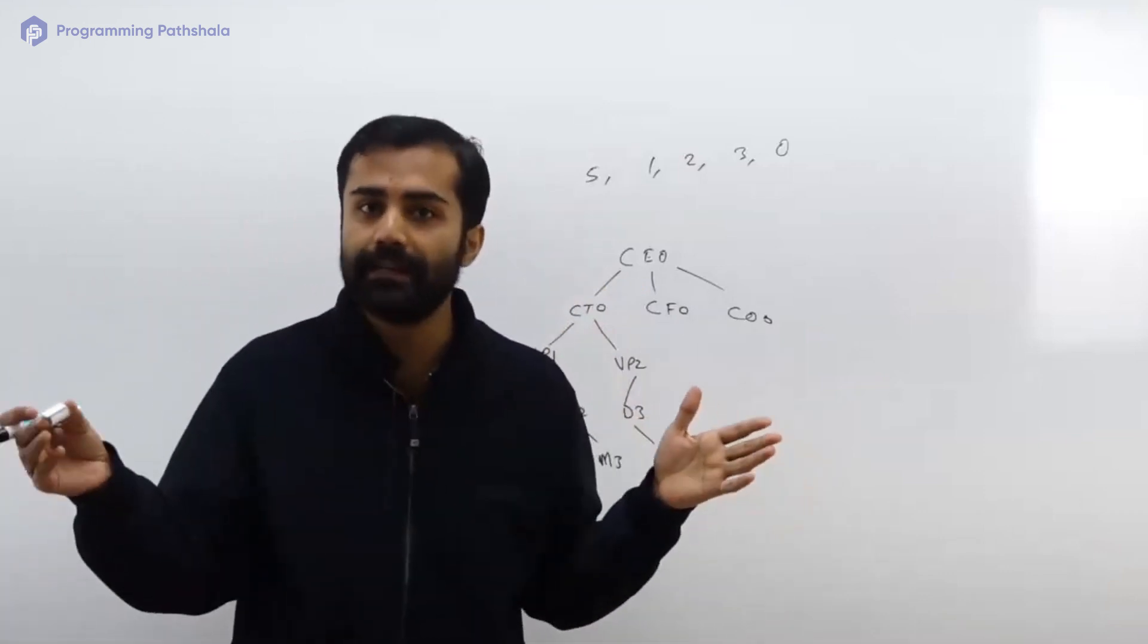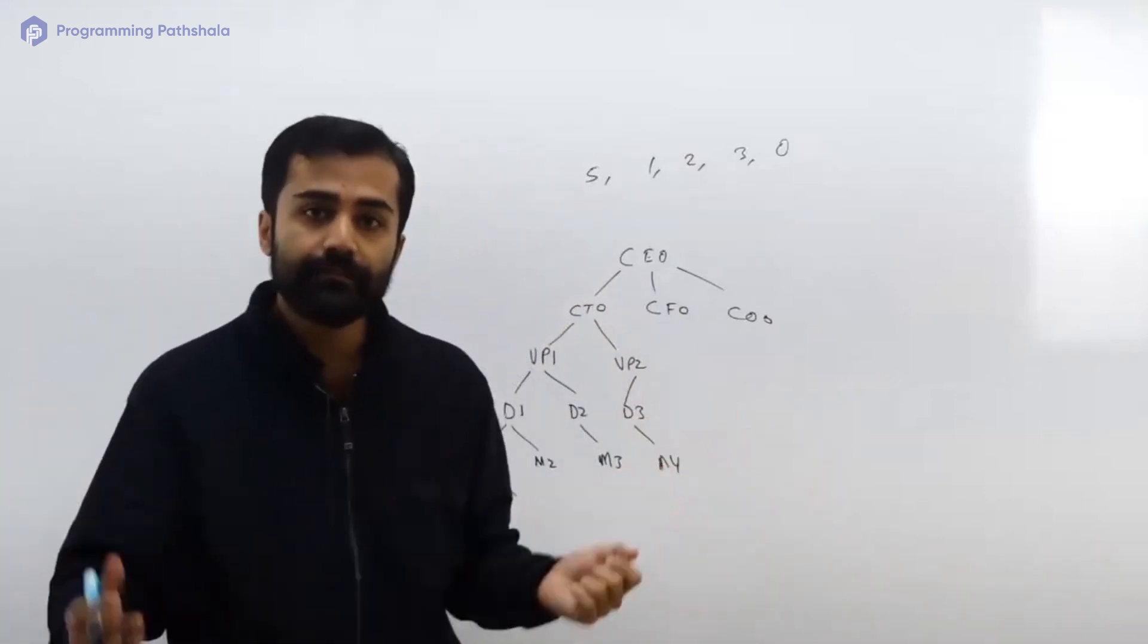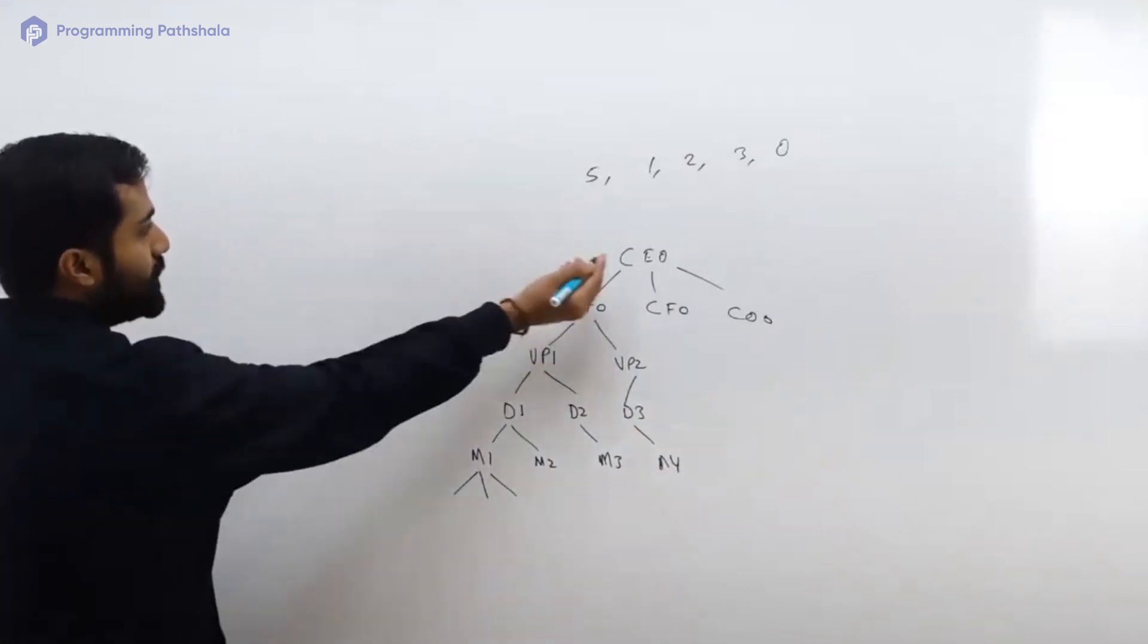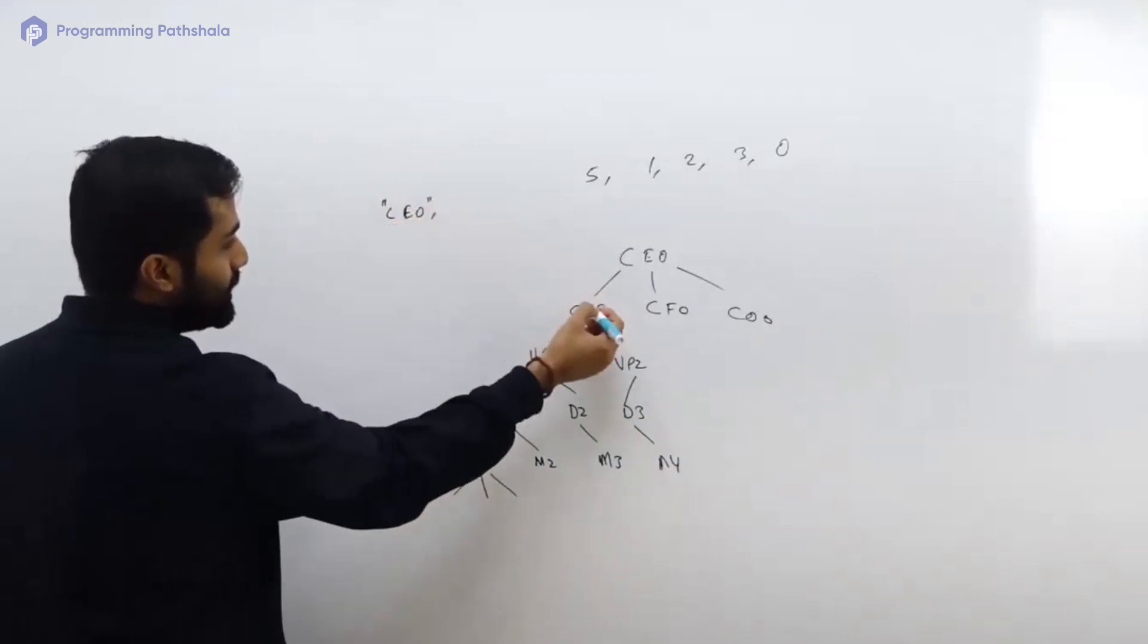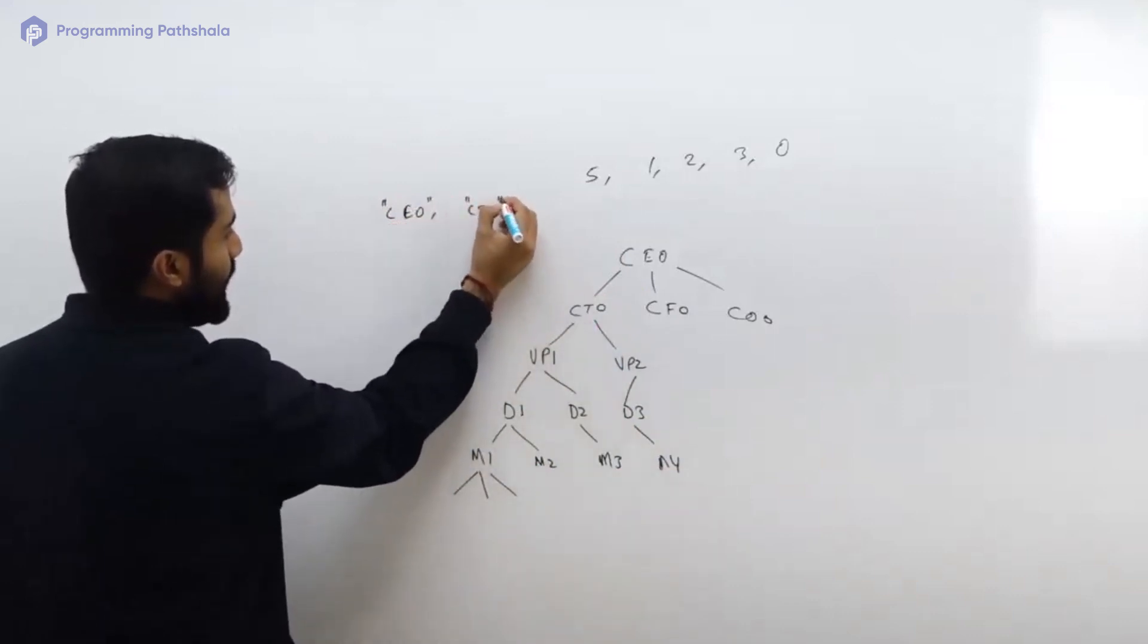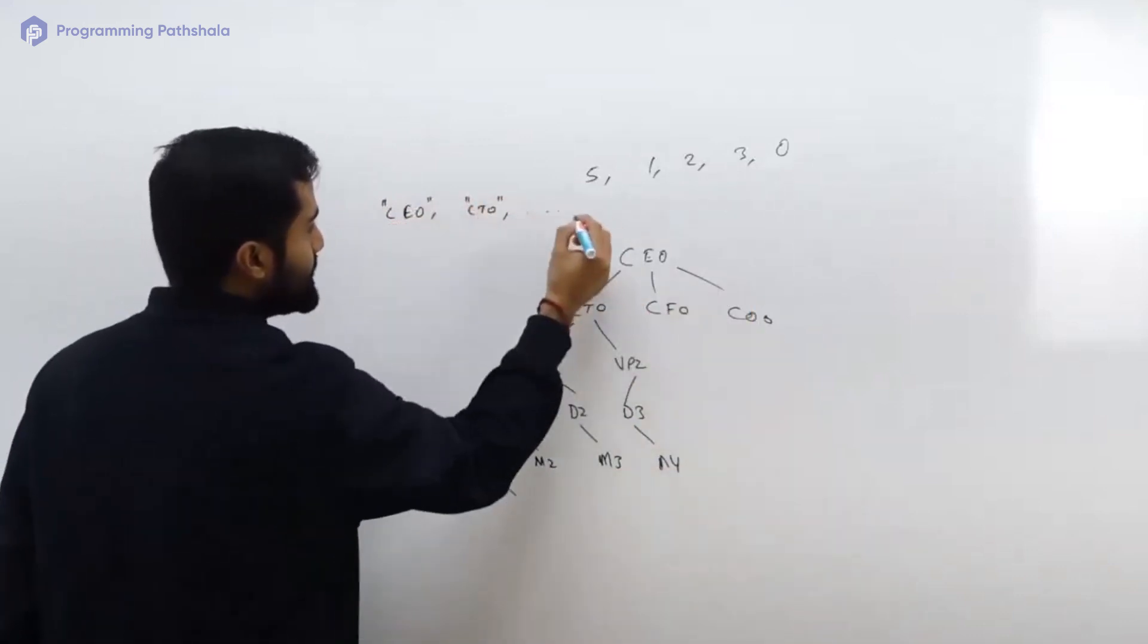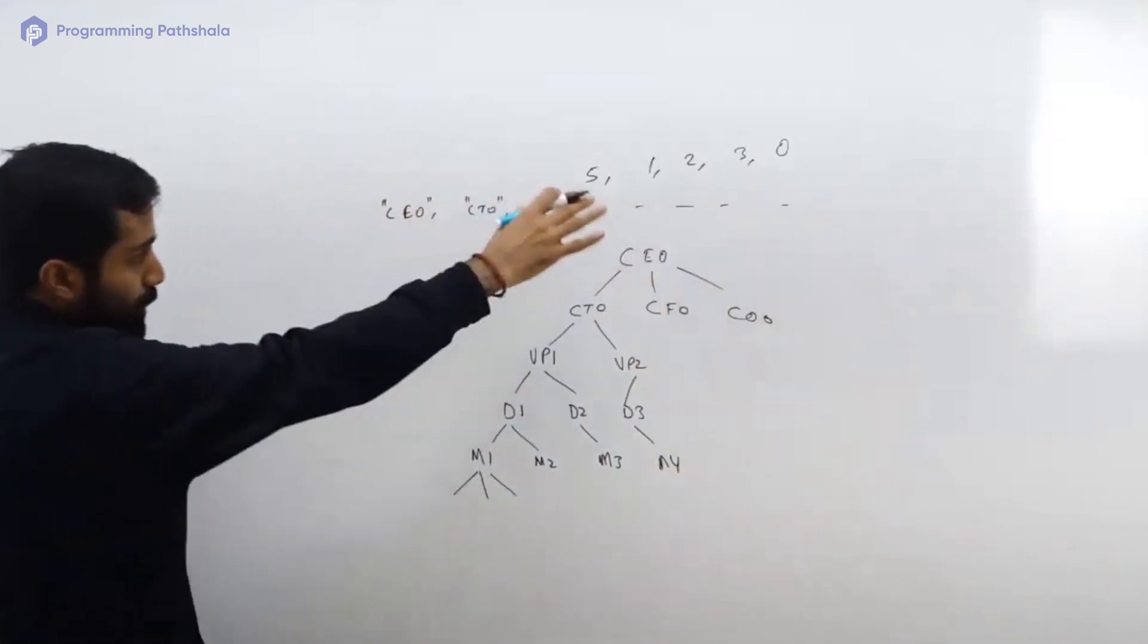Now if you want to store this data and you want to just store it in a linear array, then you can say okay I can just take a linear array and the first element of that array can be a string CEO, the second element can be CTO, and the third element can be something else, something else, something else. So if you store the data like that, what you will lose is you will lose the parent-child relationship.